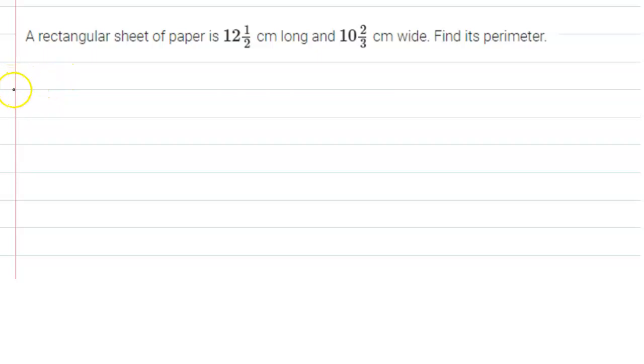Length of rectangular sheet - it is given to us. Length is 12 1/2 centimeters. We can change this mixed fraction into an improper fraction: 12 × 2 = 24, 24 + 1 = 25, so it's 25/2 centimeters. This is our length.